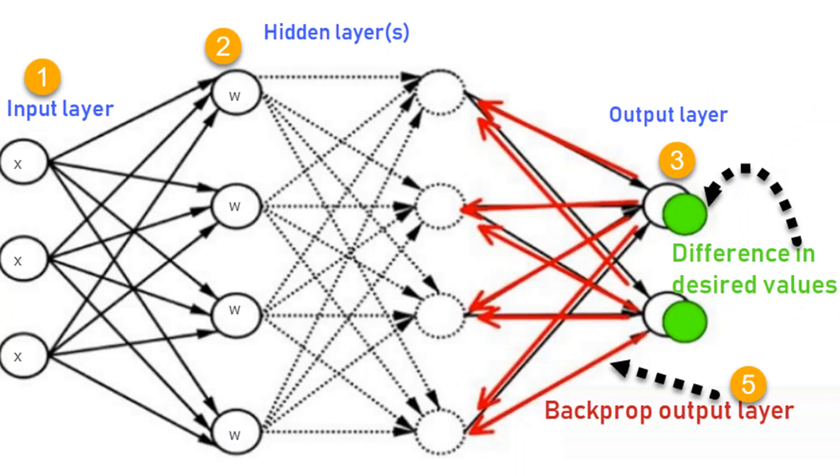The neural net reaches an output and then compares it to an expected value — just like in a science experiment where you have a calculated value and an expected value. It compares the difference, and if the loss or lack of accuracy is very high, the weights and biases change. The process of going from input to output with random weights is called forward propagation, and the process of going back and adjusting those weights and biases is called back propagation.